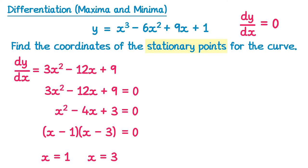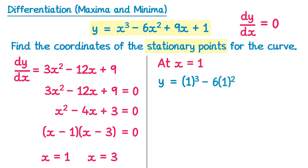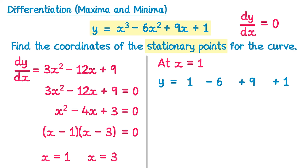We have to be careful — it didn't ask us for the x coordinate, it asked for the coordinates, so we need the y value as well. We substitute our x values back into y equals x cubed minus 6x squared plus 9x plus 1. When x equals 1: y equals 1 cubed minus 6 times 1 squared plus 9 times 1 plus 1, which simplifies to 1 minus 6 plus 9 plus 1, giving y equals 5.